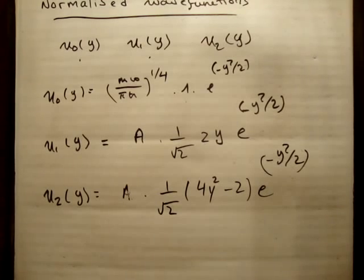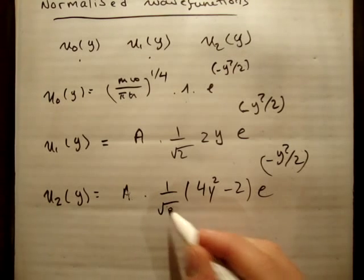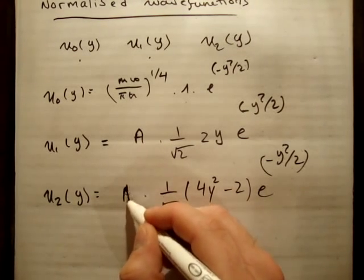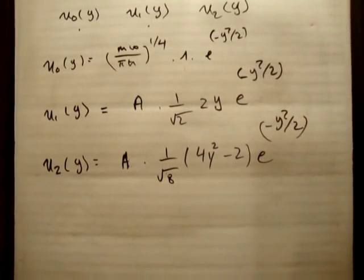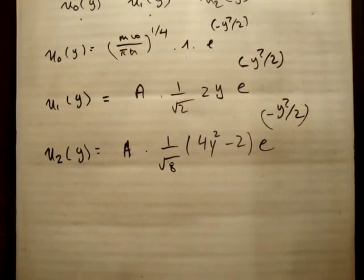And why did I write 1 over root 2 here? I'm not too sure, that should be 1 over root 8. Alright, so basically we have our Hermite polynomials. Now there's a general way of writing it, which I'm not actually going to bother doing. But the point anyway here is as follows.